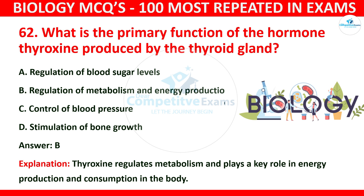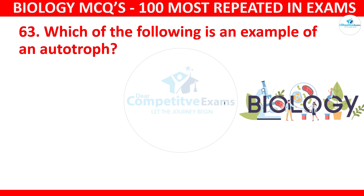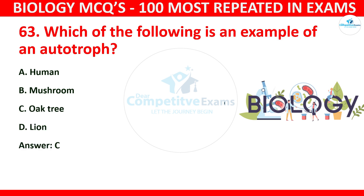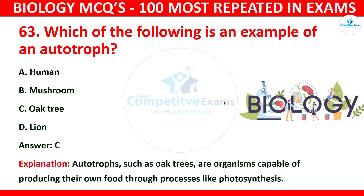Question number 63: Which of the following is an example of an autotroph? The options are human, mushroom, oak tree, or lion. The correct answer is C: oak tree. Autotrophs such as oak trees are organisms capable of producing their own food through processes like photosynthesis.